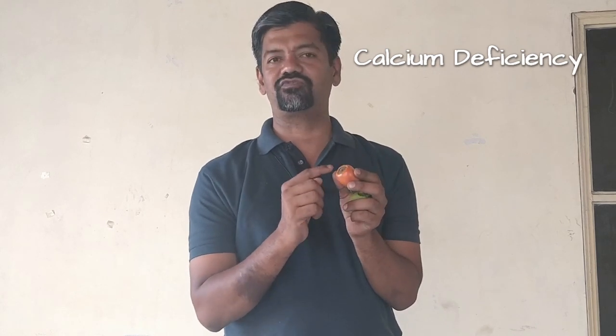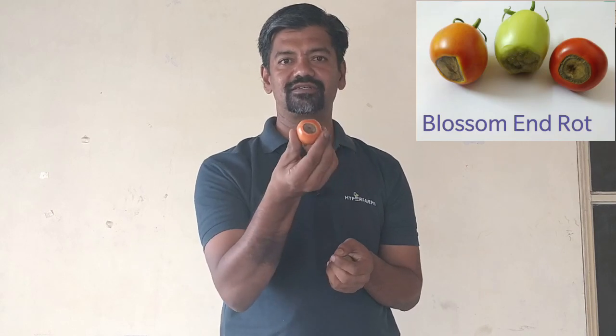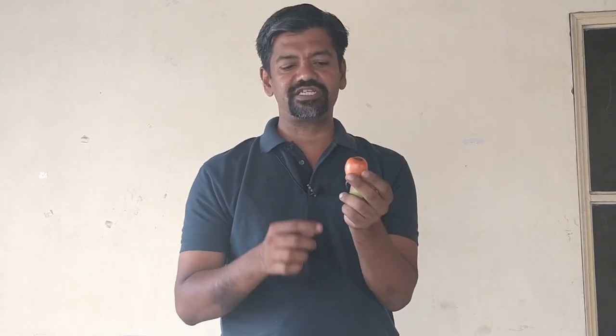So why does this happen? This is a symptom of calcium not being supplied to this part of the fruit. Calcium is responsible for the development of the cell wall — the skin of the fruit. When calcium is not supplied to this particular spot, the skin doesn't develop, causing a rot.